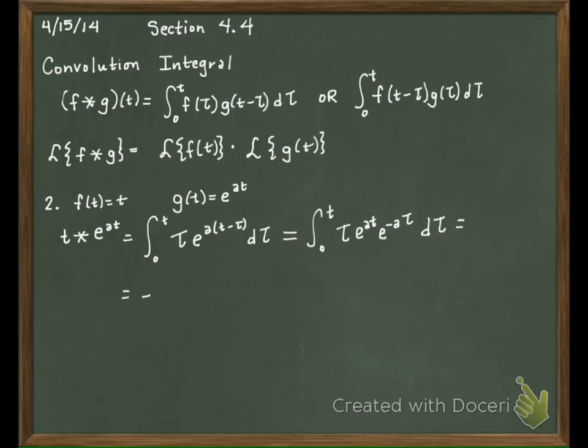So this would become E to the AT, and then tau E to the negative A tau, and that I can integrate by parts.